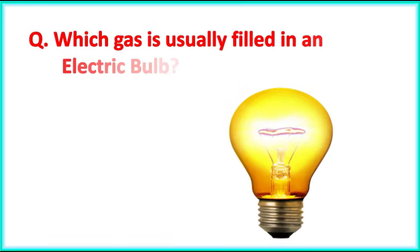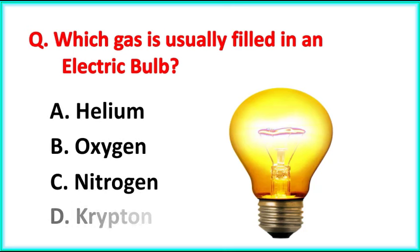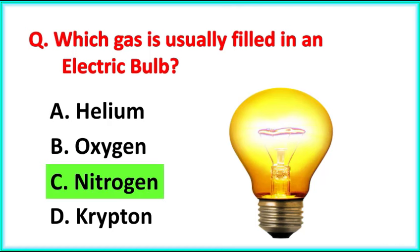Which gas is usually filled in an electric bulb? The correct answer is Option C. Nitrogen gas.